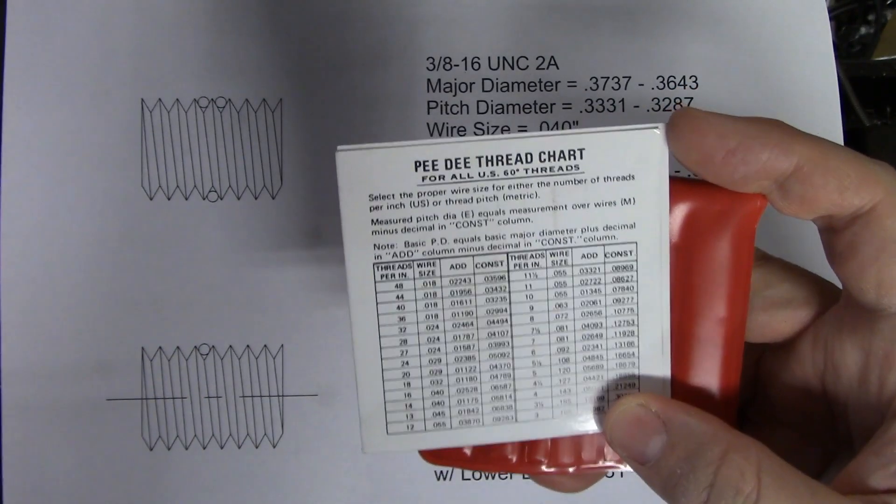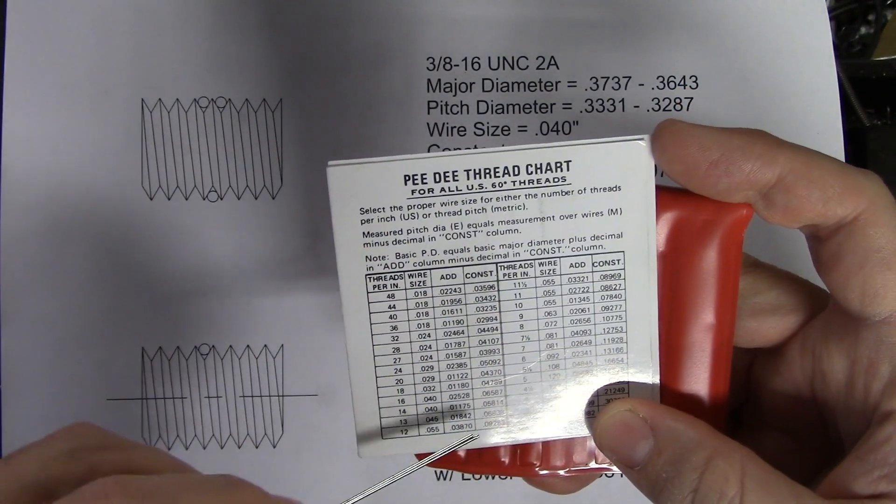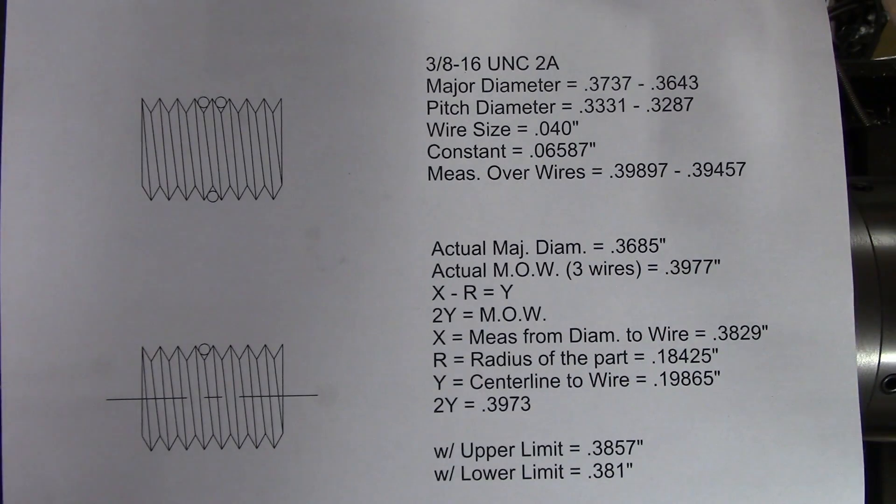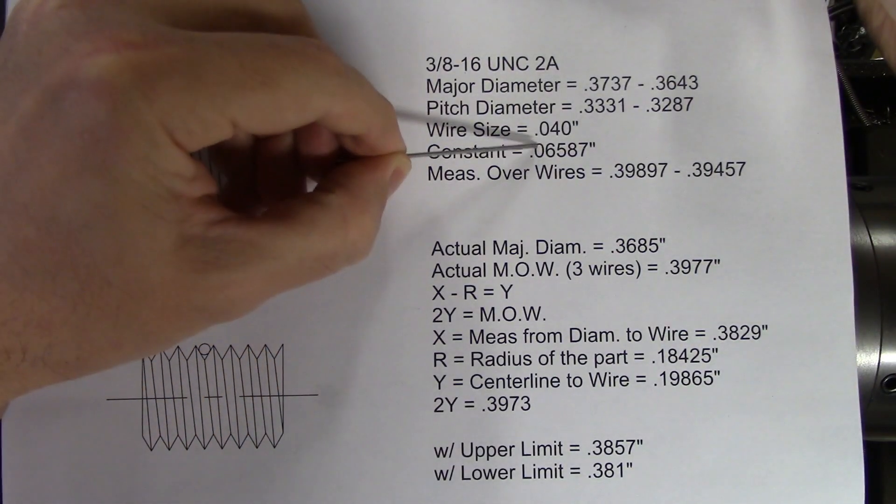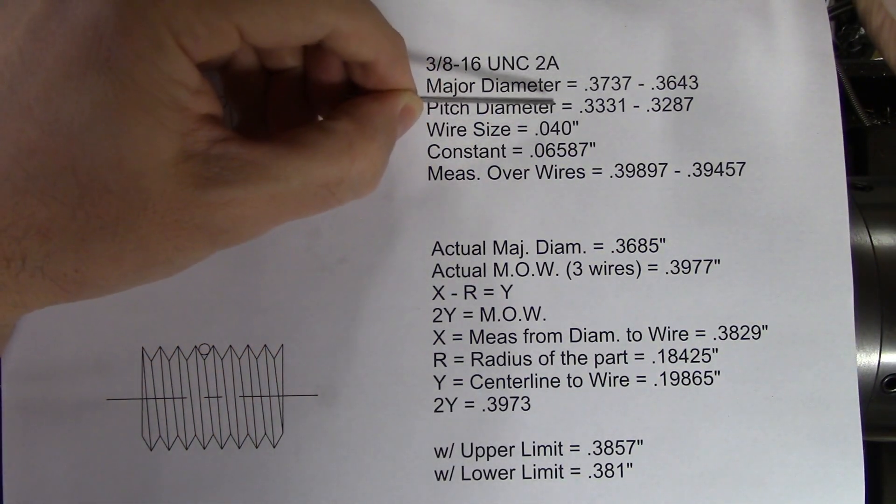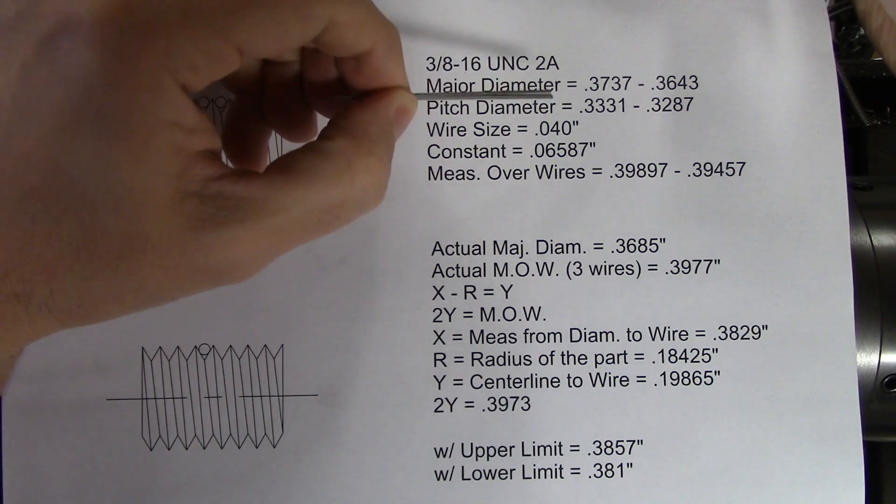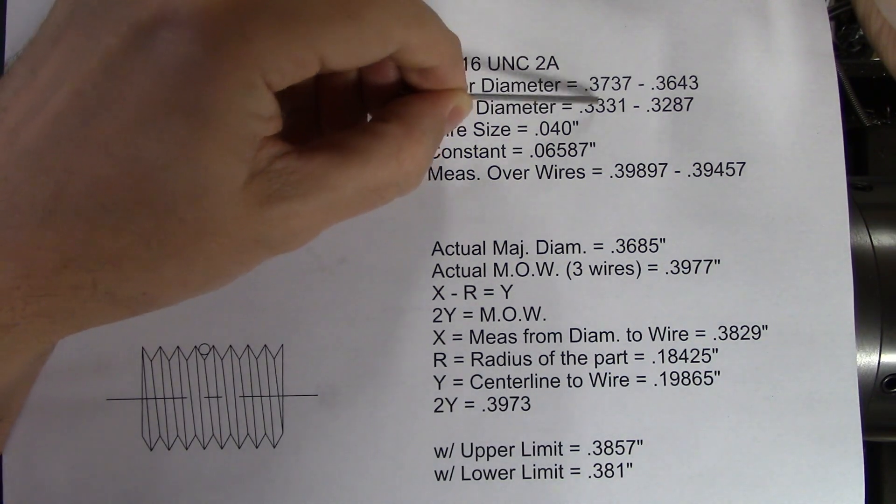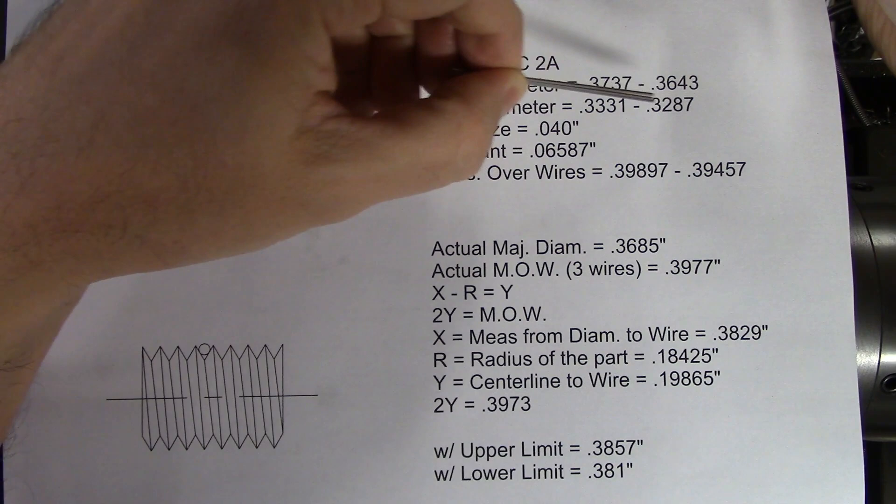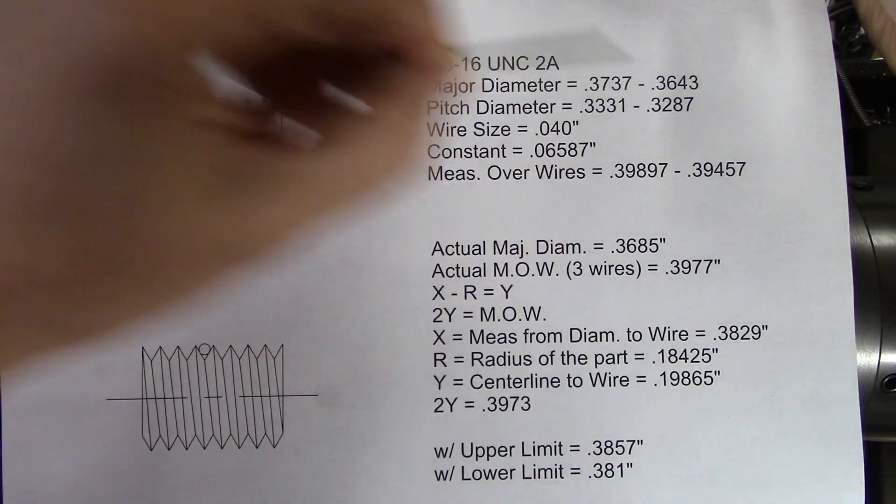You'll also find a number in that chart labeled as the constant. This is how much you would subtract from your measurement over wires to get the pitch diameter of the thread. Or if you do it like I do, how much you should add to each of these pitch diameter numbers to get an acceptable measurement over wires range.